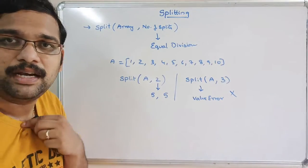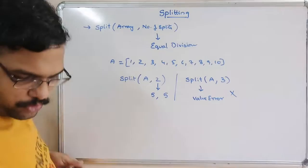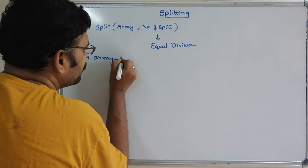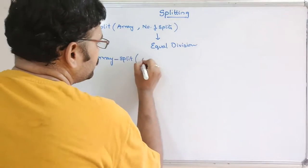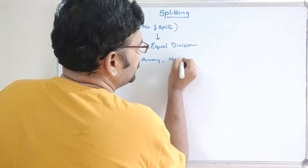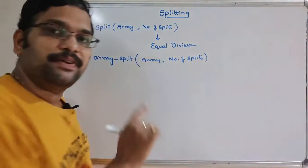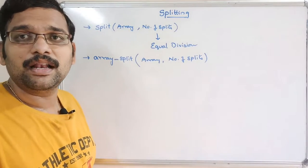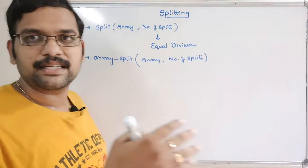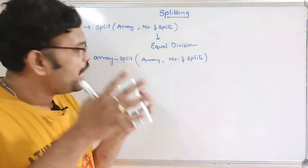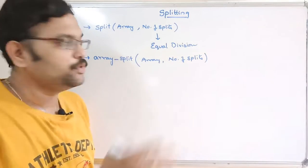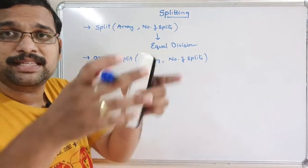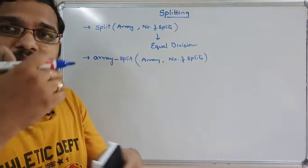In order to get any number of divisions, we use another function called array_split. It also takes two parameters: the array to split and the number of splits. It first checks for equal divisions; if possible, equal divisions are done. If not, the arrangement is done from the last element, adjusting how many elements should be in each resulting array accordingly.